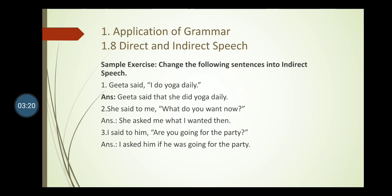Sentence two: She said to me, 'What do you want now?' This is an interrogative sentence. 'Said to' becomes 'asked me'. The conjunction 'that' is not used for interrogative. 'You' means 'I', so 'you' changes to 'I'; 'want' changes to 'wanted'; 'now' changes to 'then'. Answer: She asked me what I wanted then.